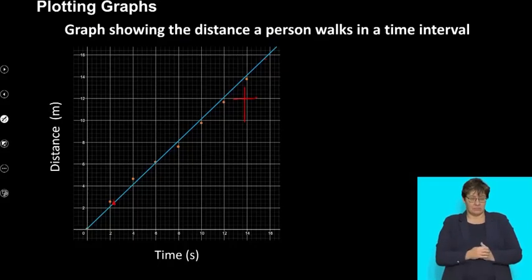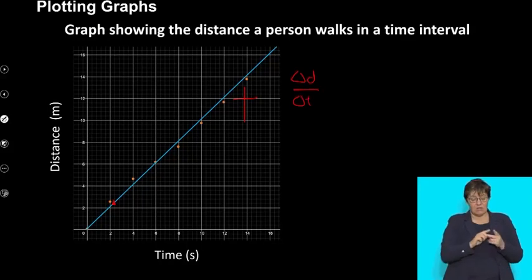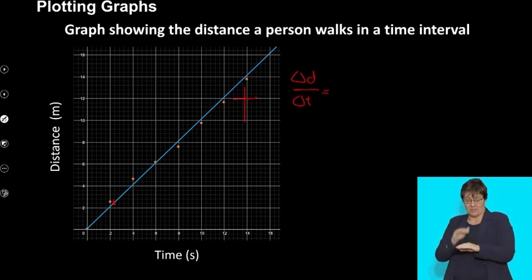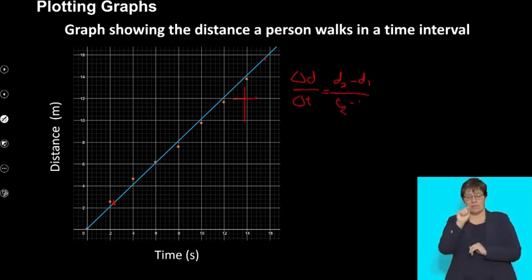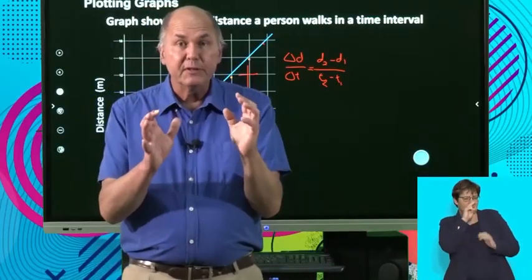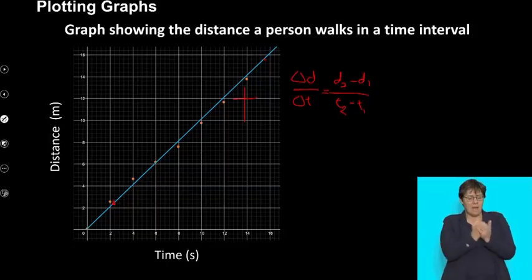If I've taken those two points, remember what the formula for gradient is. It's going to be the change in distance over the change in time and we're going to take this point here as distance two minus distance one over time two minus time one.